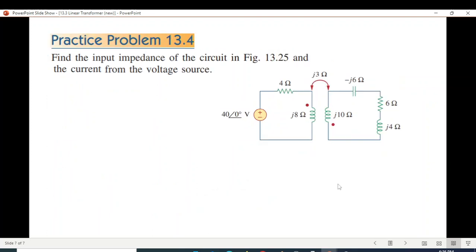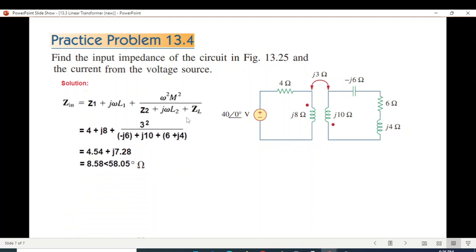Practice problem: exactly the same way. Direct formula, put values. Z1 is 4, j omega L1 is j8, omega M square is 3 squared, that's 9. Secondary side is minus j6 plus j10 plus 6 plus j4. Using the calculator directly, you get the answer in rectangular form. To get the answer in polar form, calculate current as V over Z in. 40 angle 0 divided by Z in, and that's the final answer.